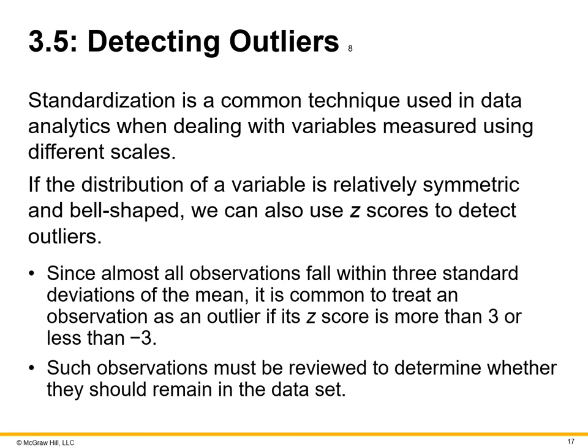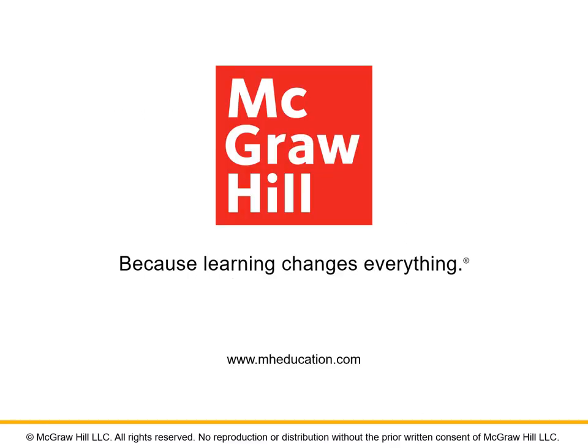Such observations must be reviewed to determine whether they should remain in the data set. In summary, choosing the right measurement — mean, median, or mode — is important, as is looking for correlations, ensuring standard deviation is intact, and identifying outliers that should either be reconsidered for usefulness or removed from the data set entirely. This concludes the overview of Chapter 3. Thank you for your time and we'll see you in Chapter 4.